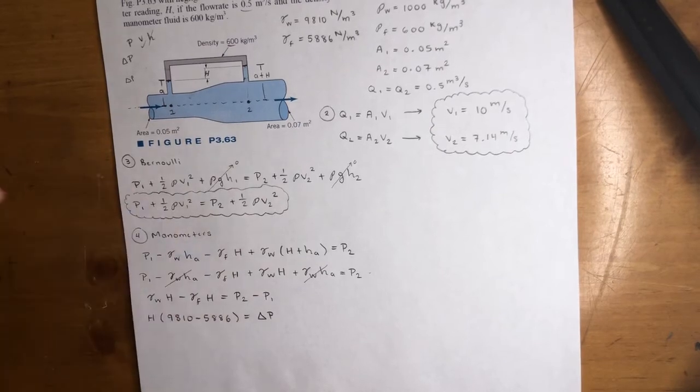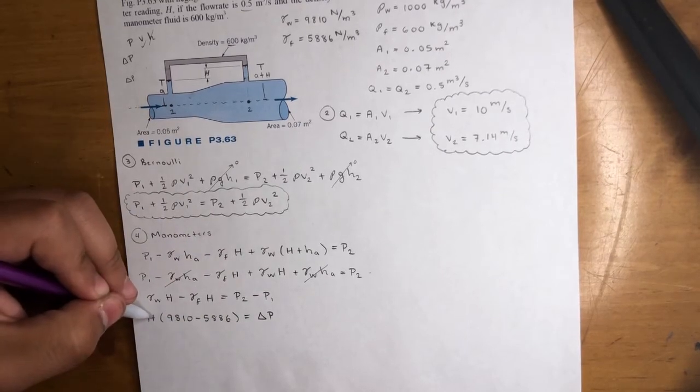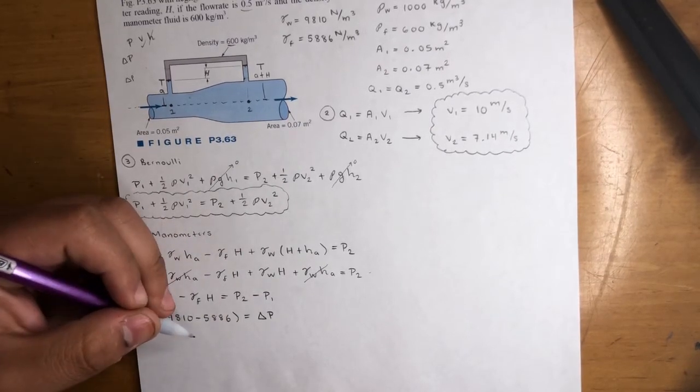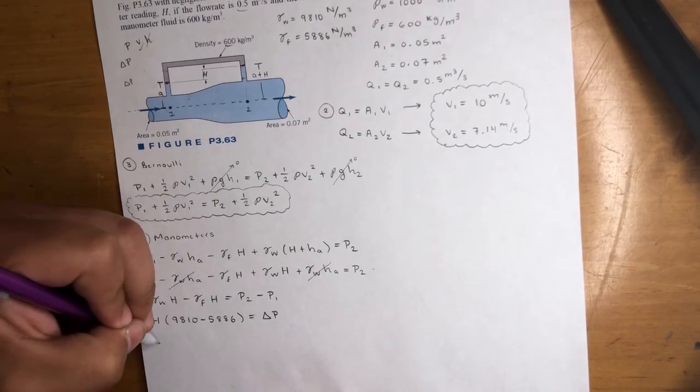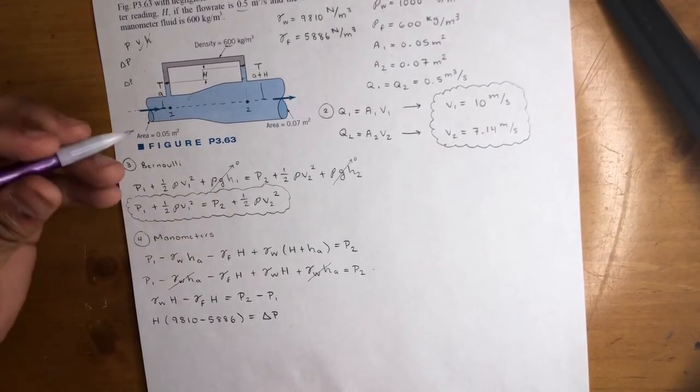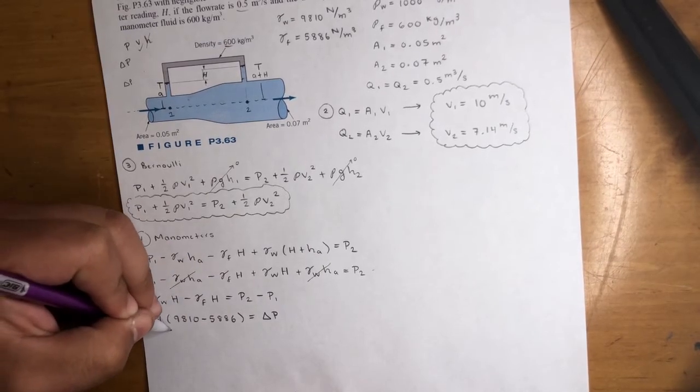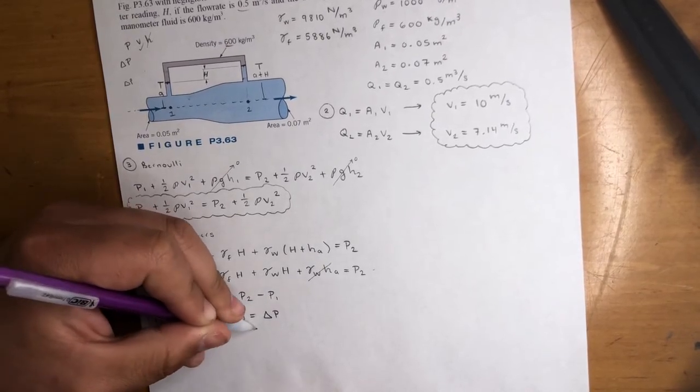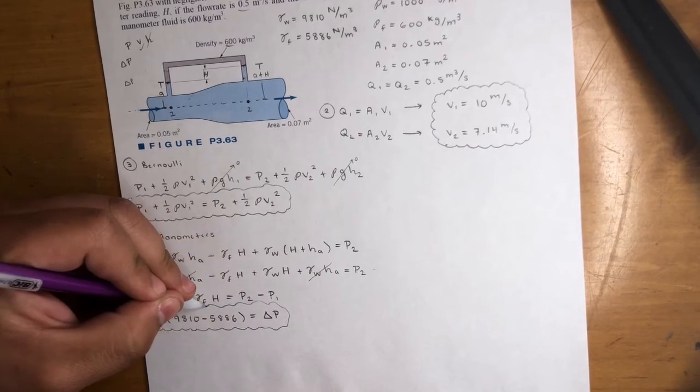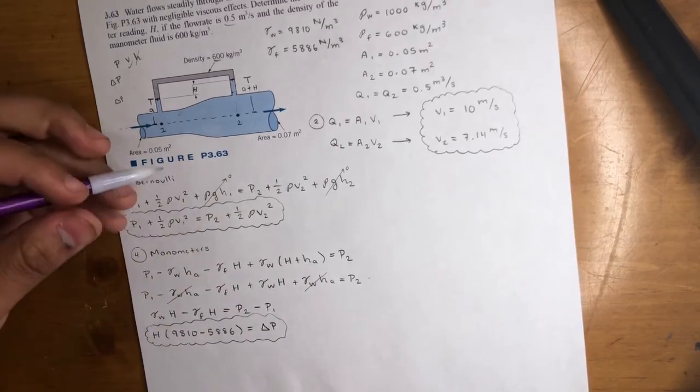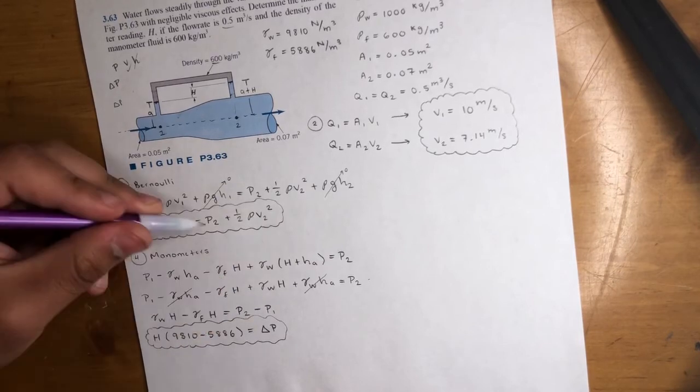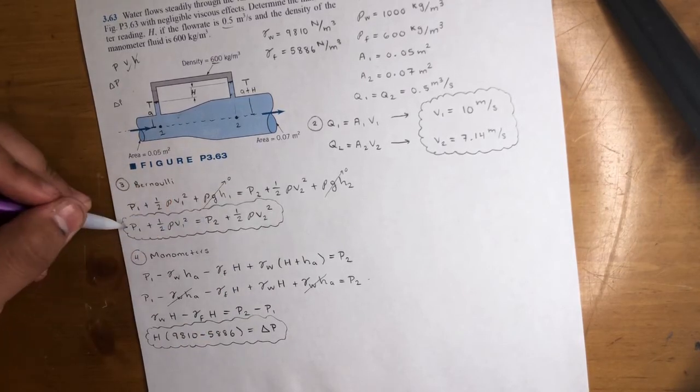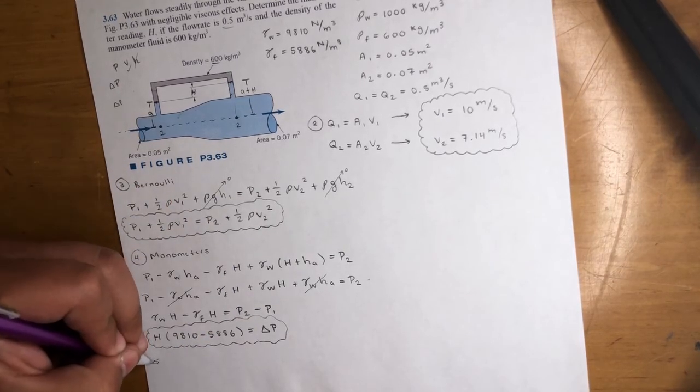We don't know P2 or P1, but we do know gamma of water, gamma of fluid. So let's go ahead and do that. Actually, we could factor out the H. Gamma of water is 9,810 minus 5,886 is equal to - I'll put delta P. Okay. So that just means difference in pressure. I'll just leave it like that for now. It doesn't matter. I'm too lazy to do the calculation, but we got to do it. So now we do the same thing. This is delta P, P2 minus P1. We isolate P2 minus P1 on this equation too.